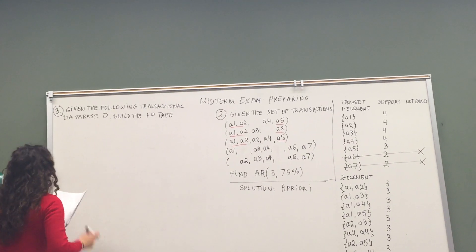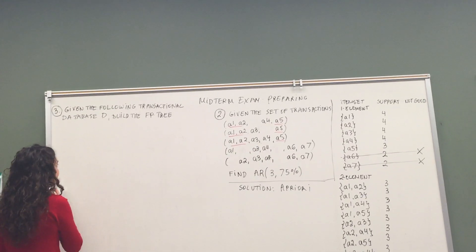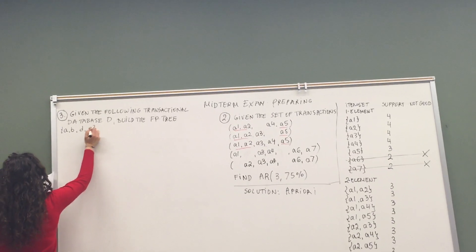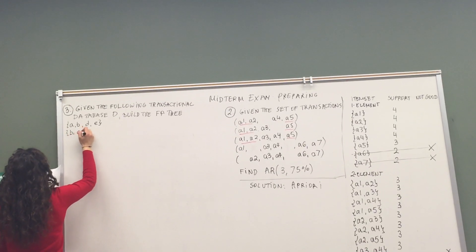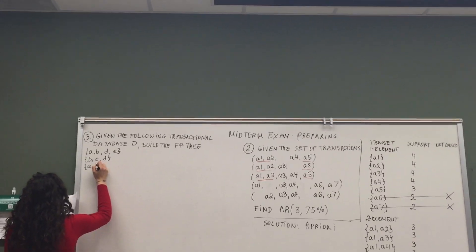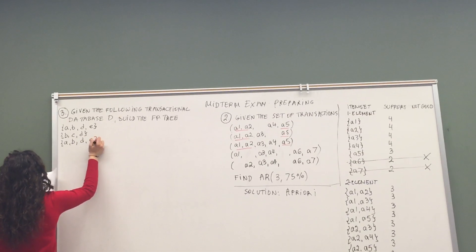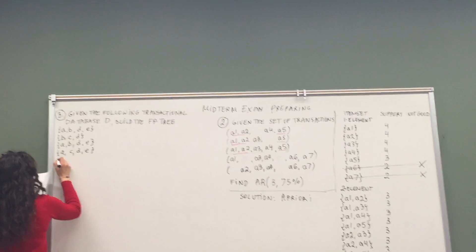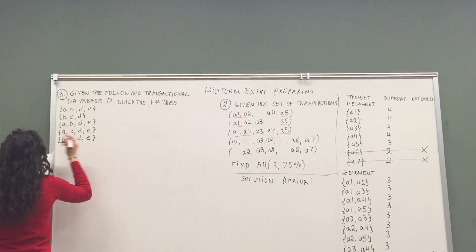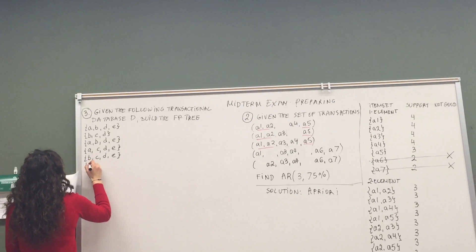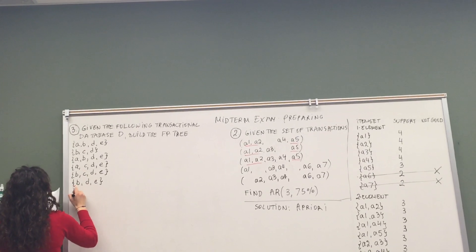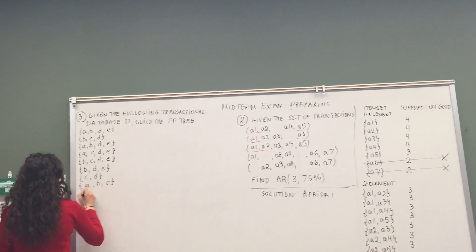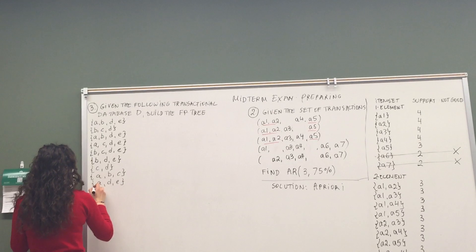The transactions are: A, B, D, E. Then B, D, D. Then A, B, D, E. Then A, C, D, E. Then B, C, D, E. Then B, D, E. Then C, D. Then A, B, C. Then A, D, E, B, C, D, E.